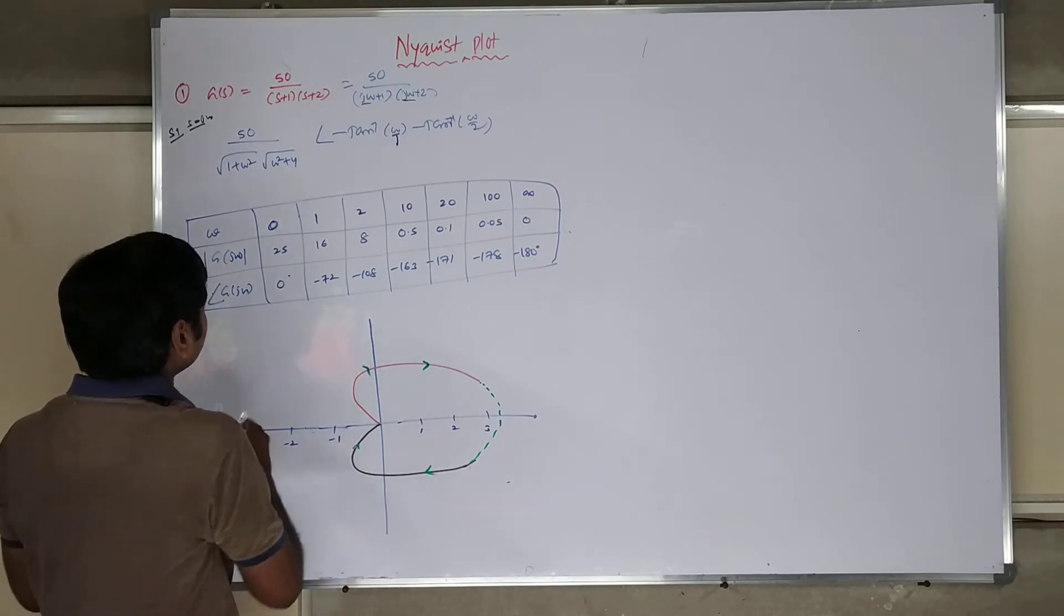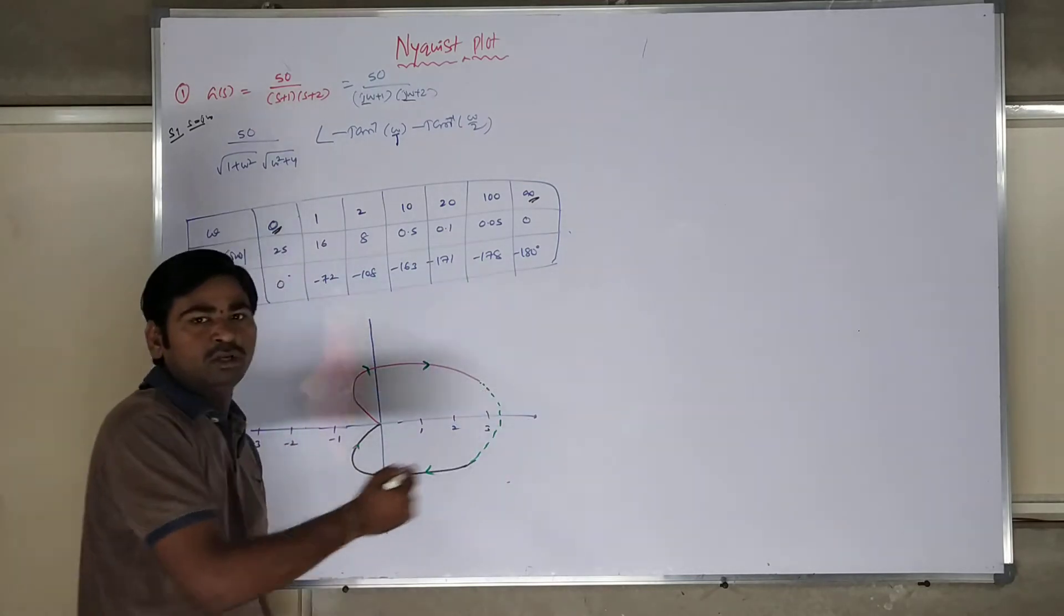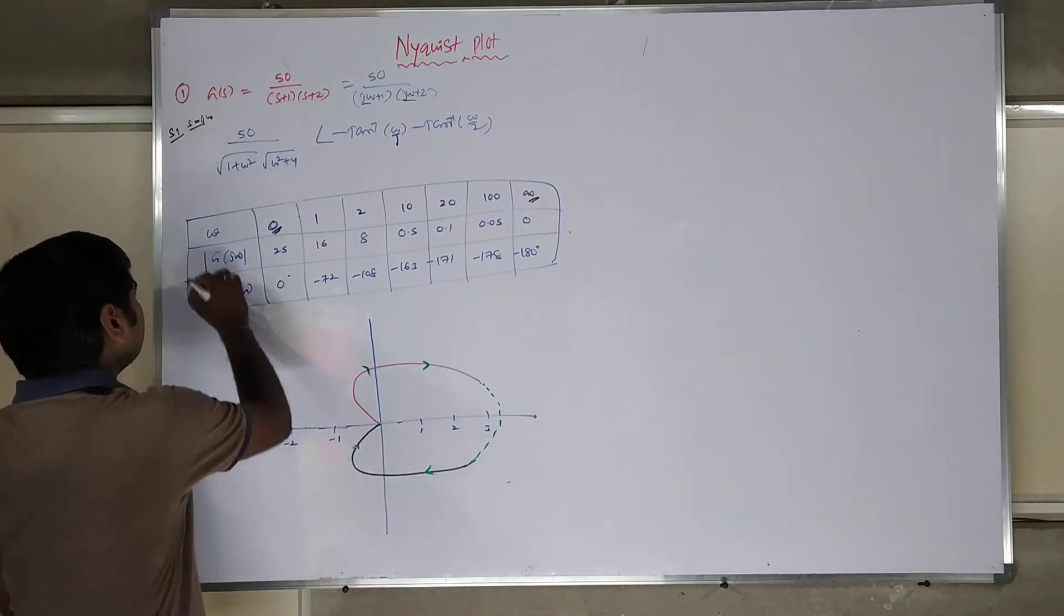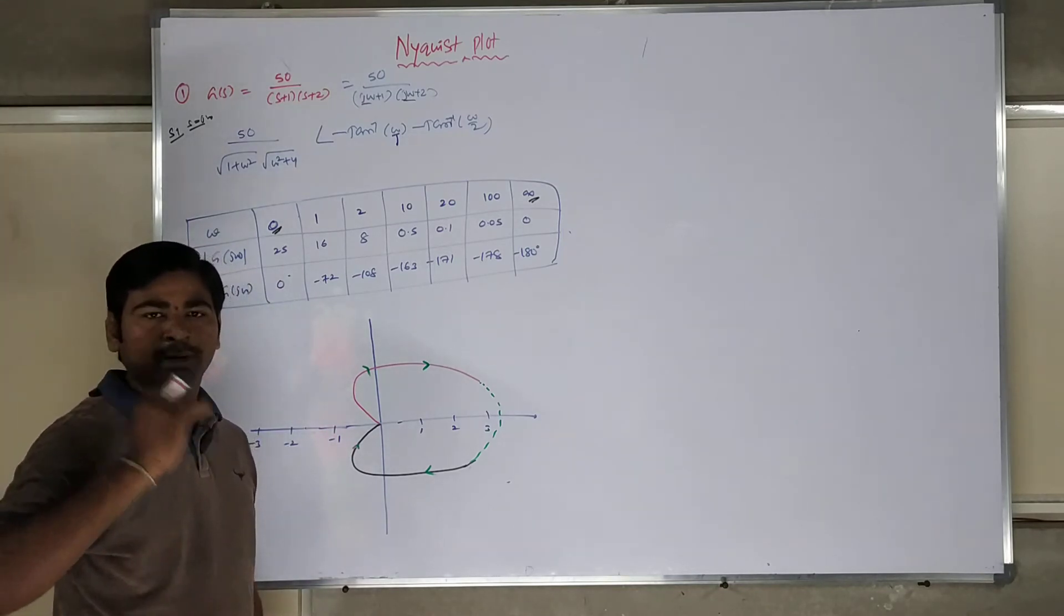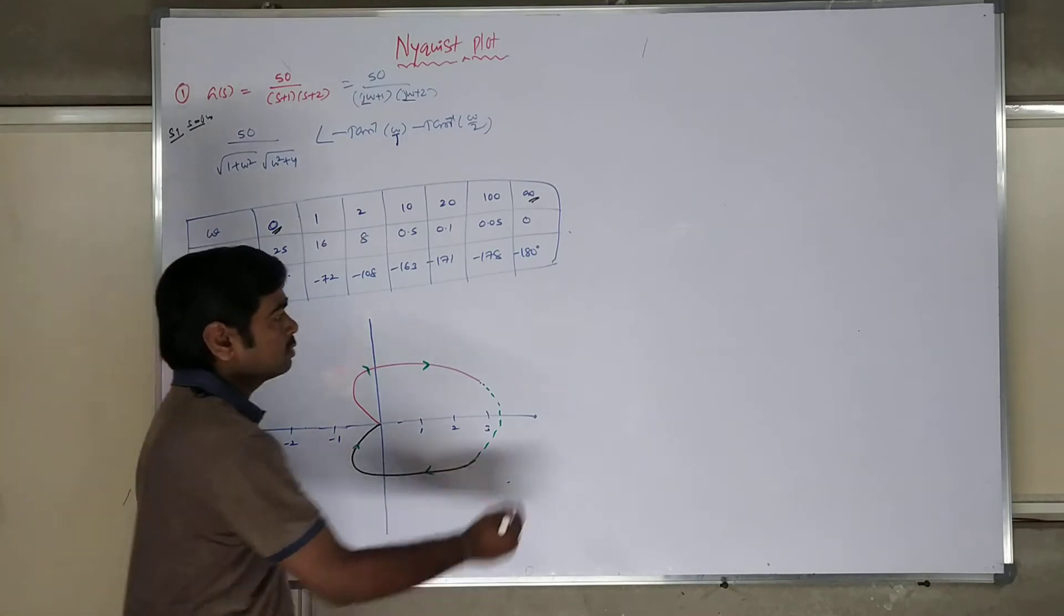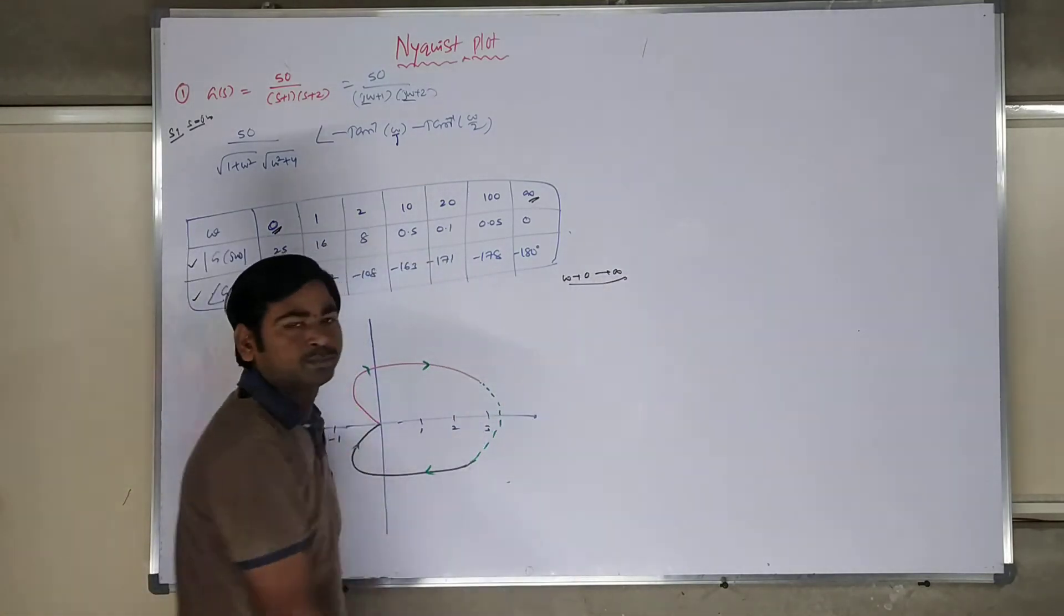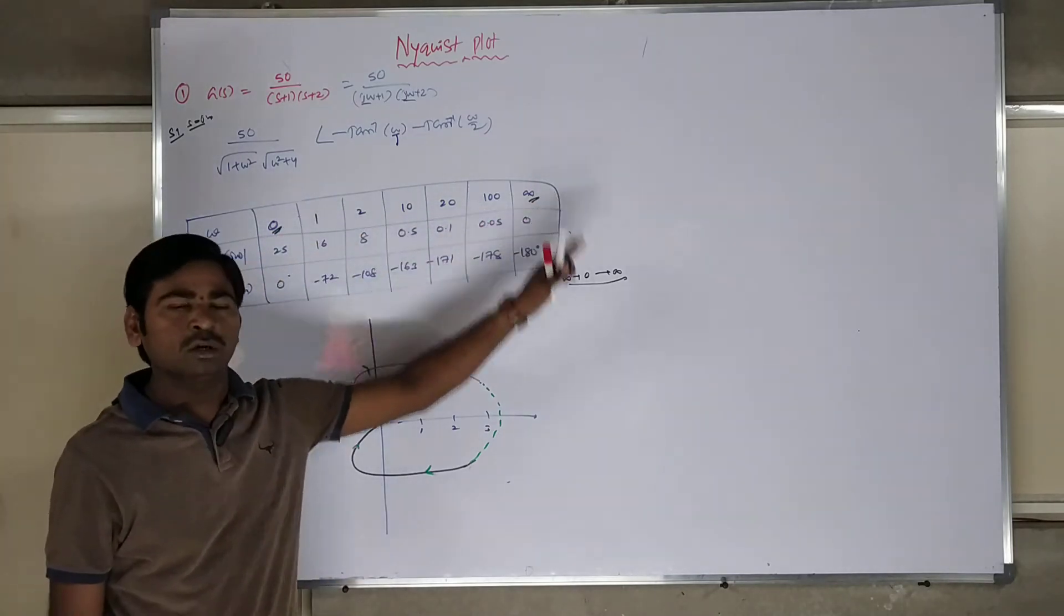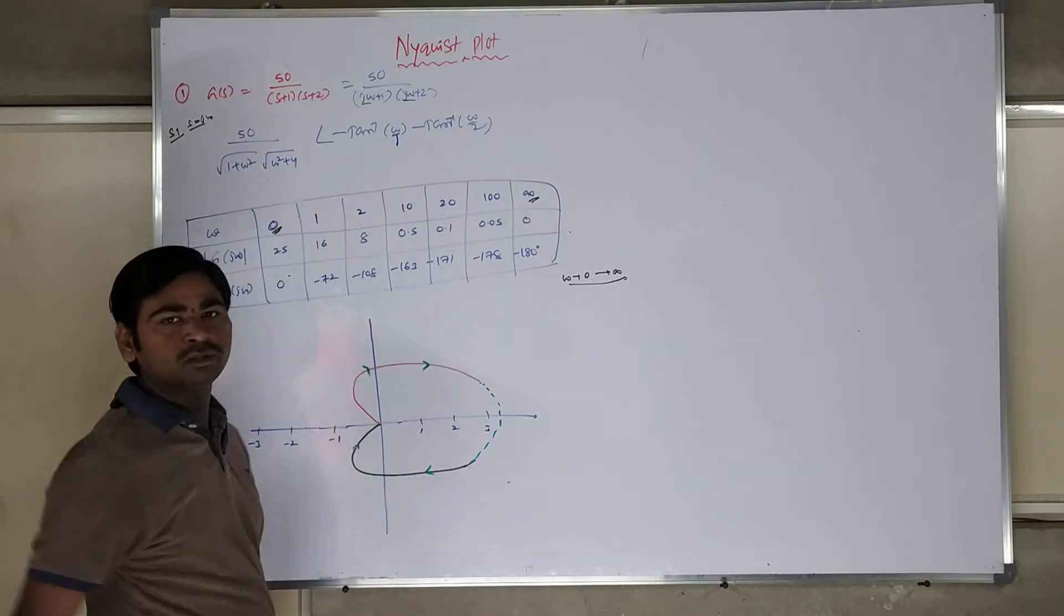If you want to change your omega value, G of S at infinite values, from 0 to infinite, how your plot is going to be changed, how your magnitude and phase angle is going to be changed. So polar plot, you are drawn between magnitude versus angle, when omega is equal to 0 to infinite variation. Let's assume 0, 1, 2, 10, 20, 100, and infinite, to find out how that variation is going to happen.